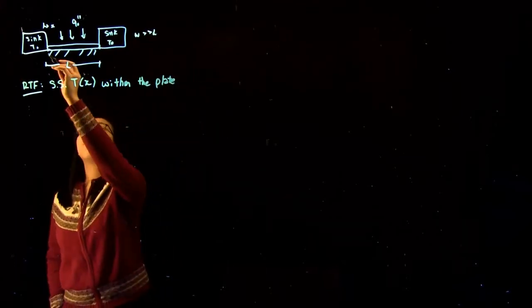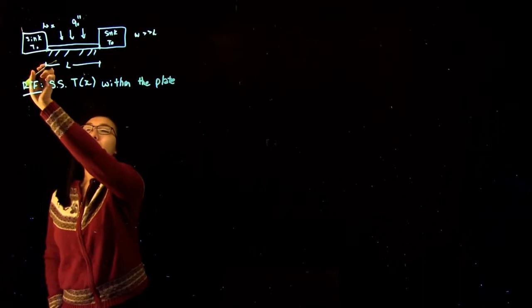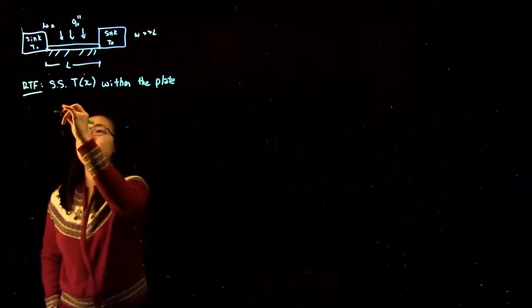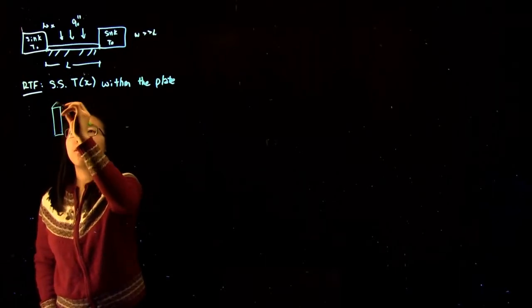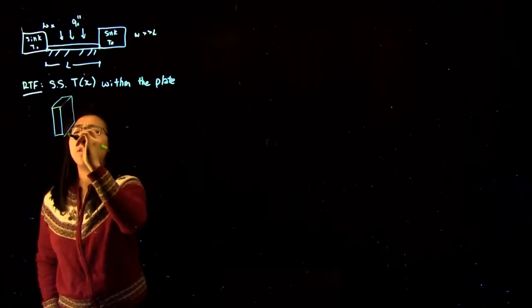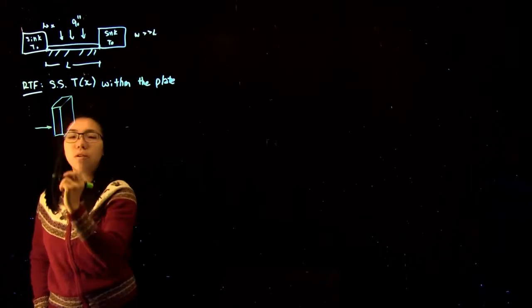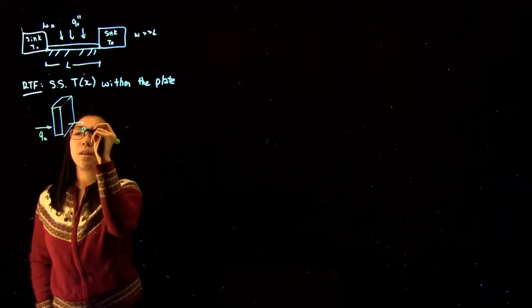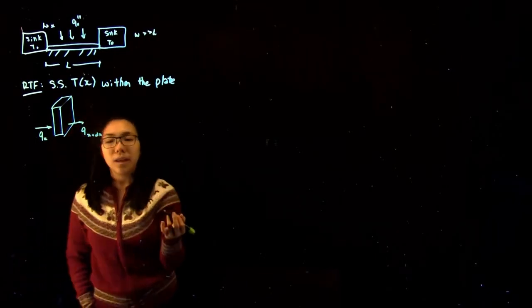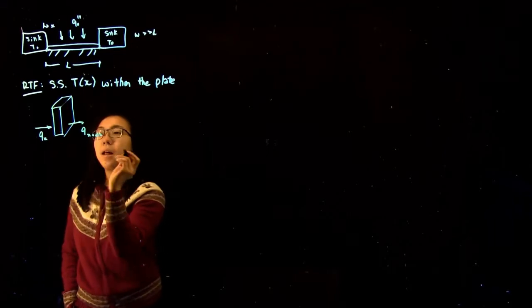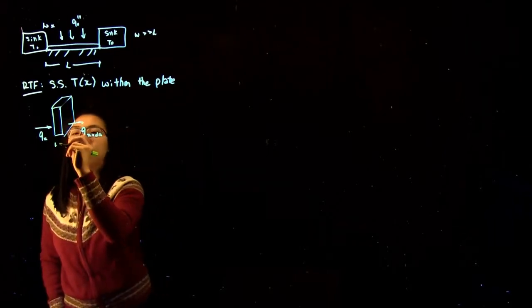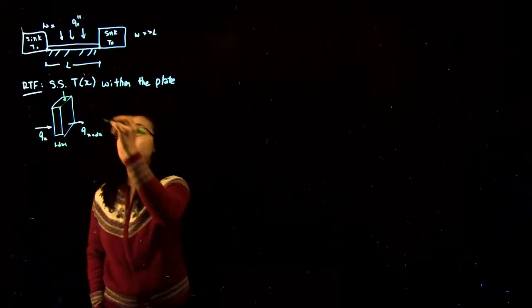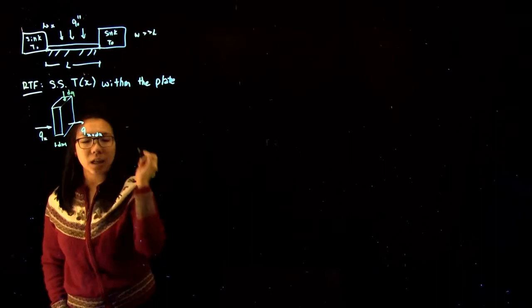We've defined the x-axis to start from this boundary over here and head in this direction. The first thing we can do is consider a differential control volume within the bar. Whatever is entering we can call Qx, and what's leaving is Qx plus dx — that's a certain amount of heat happening a little bit down the volume where the width is dx. We're also given a differential amount of heat dq that's entering.